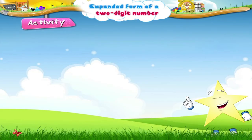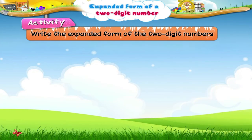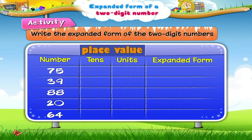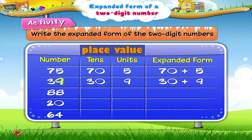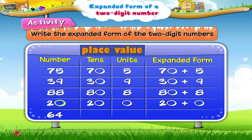Let us go for an activity. Write the expanded form of the two-digit numbers. The expanded form of 75 is 70 plus 5. The expanded form of 39 is 30 plus 9. The expanded form of 88 is 80 plus 8. The expanded form of 20 is 20 plus 0. The expanded form of 64 is 60 plus 4.